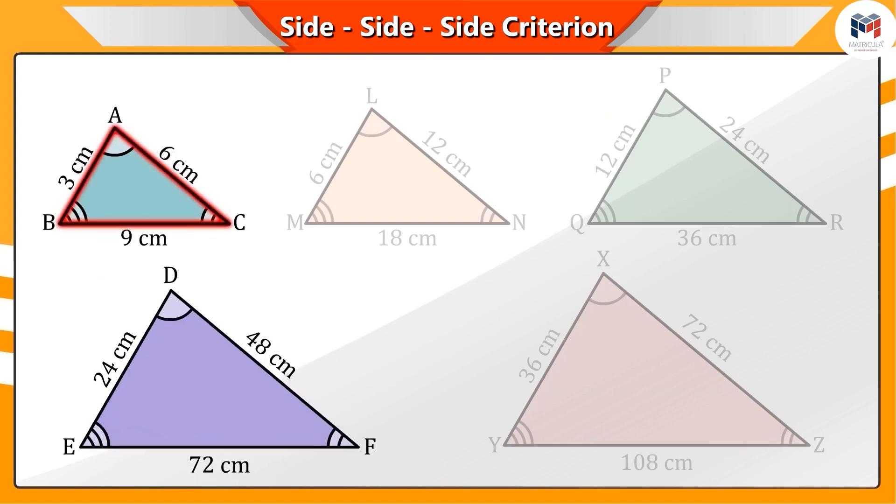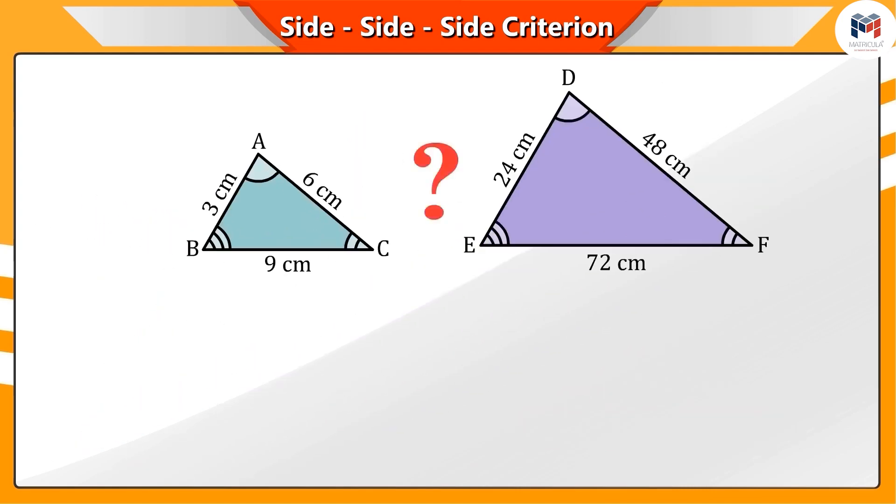Can you tell if triangles ABC and DEF are similar?